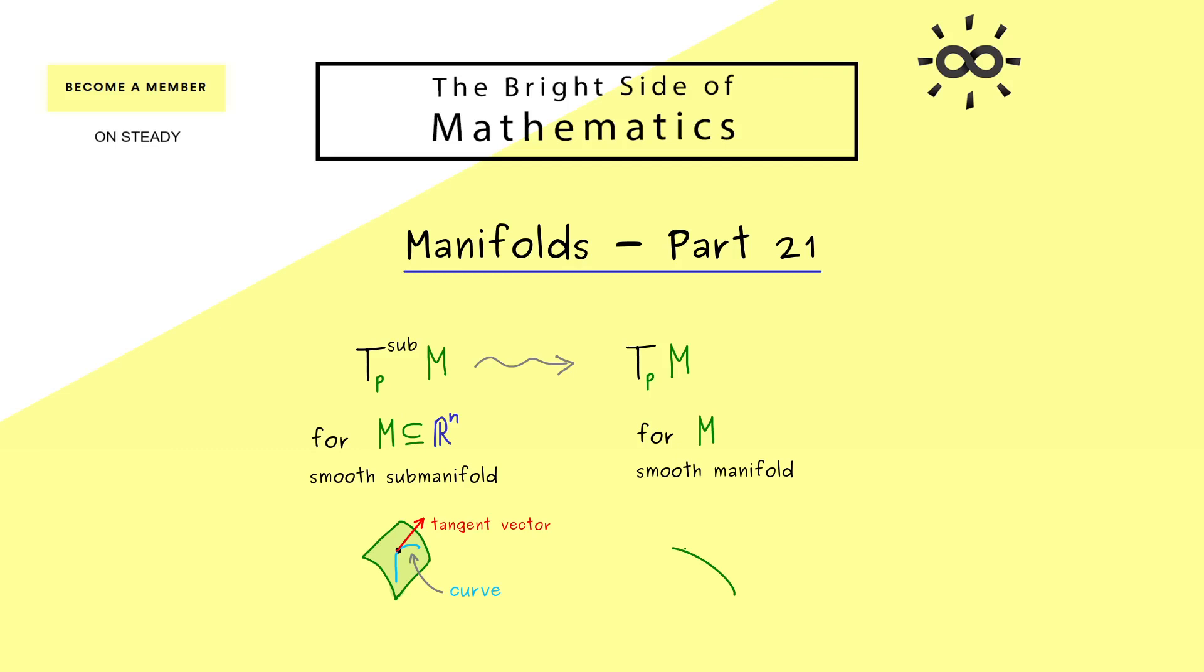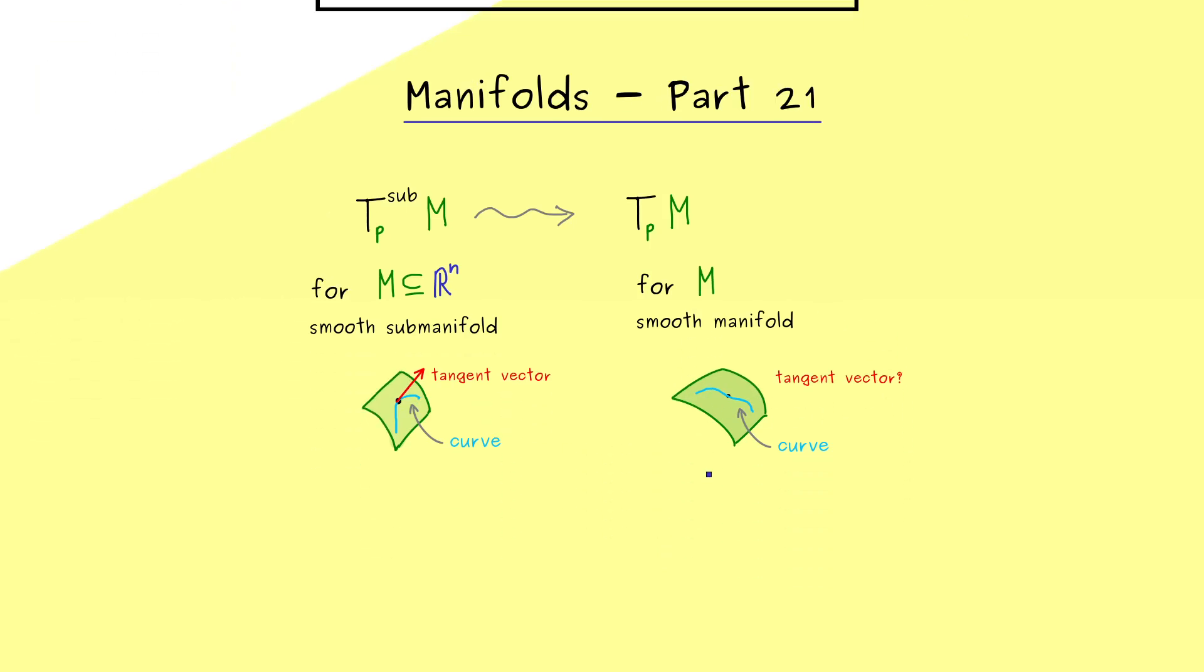Now the thing is, this tangent vector does not live in the manifold, but it lives in R^n. So we explicitly use the surrounding space here. However, on the right hand side, there is no space around it, there is just the manifold itself. Therefore, the immediate question is, what is a good substitute for our R^n? Because otherwise everything looks the same, we have the point p and we can look at curves through p. The only problem there is that the derivative does not make sense.